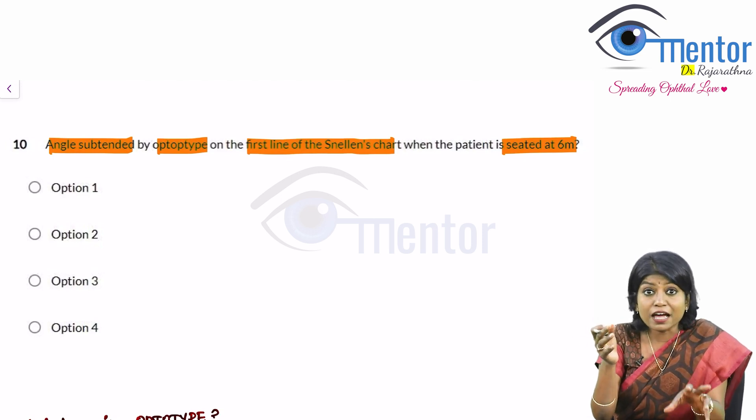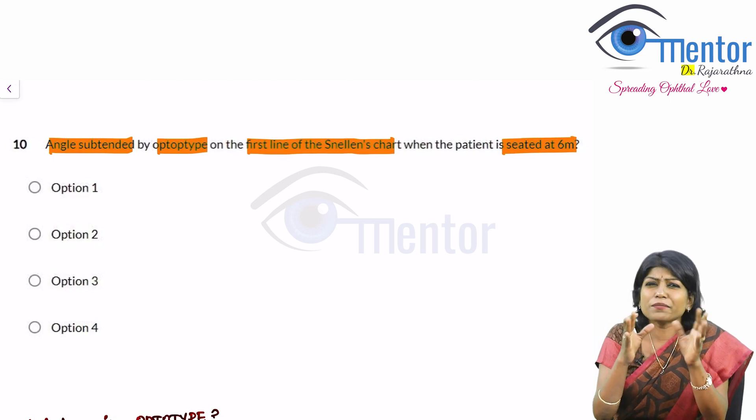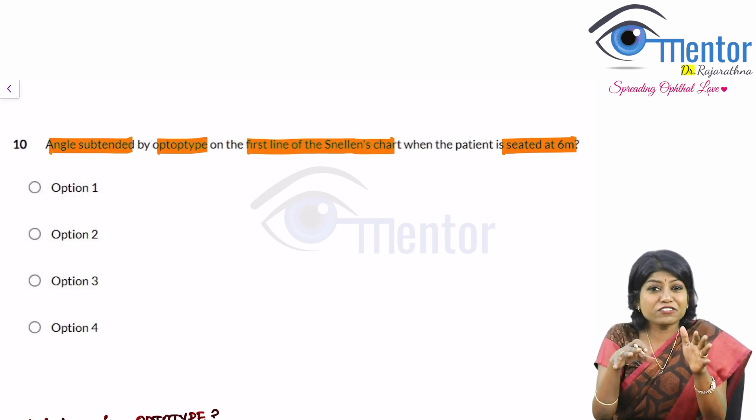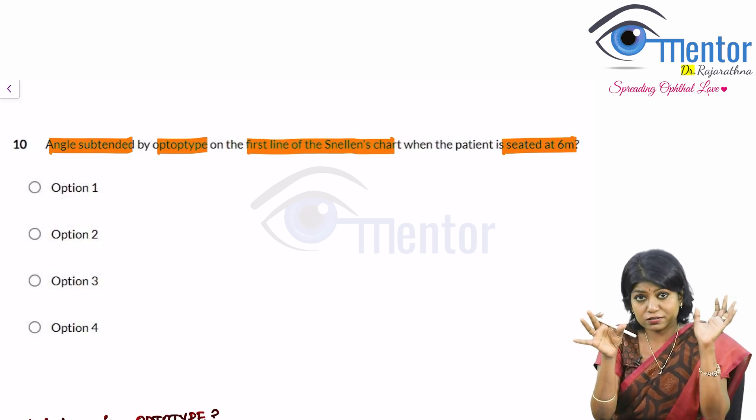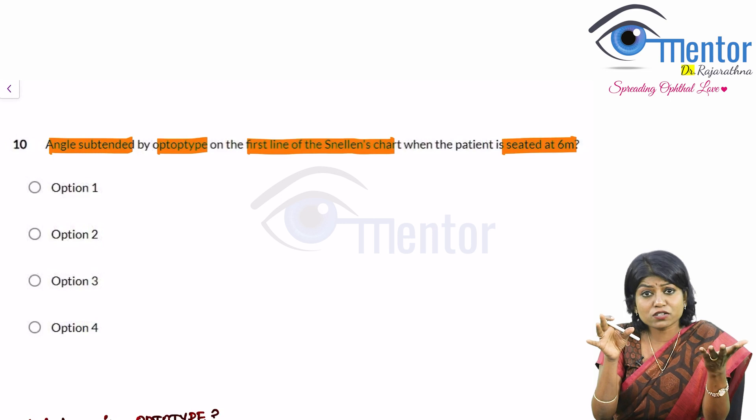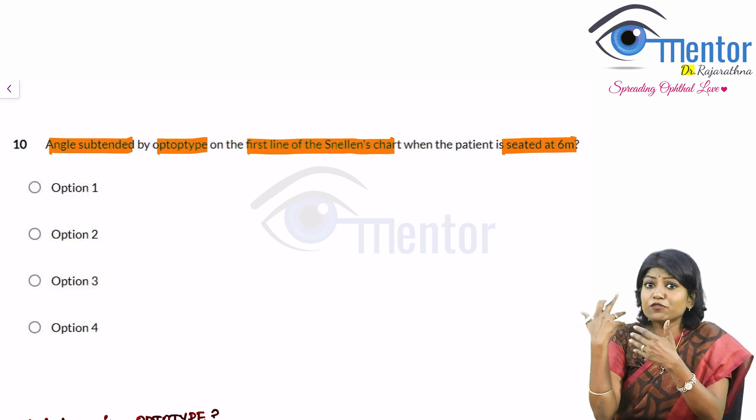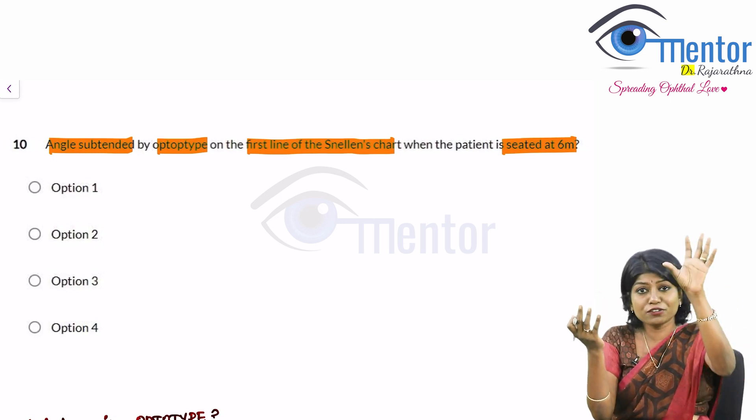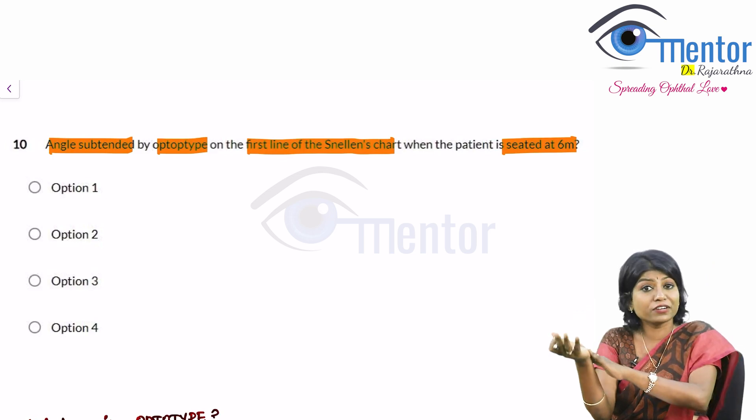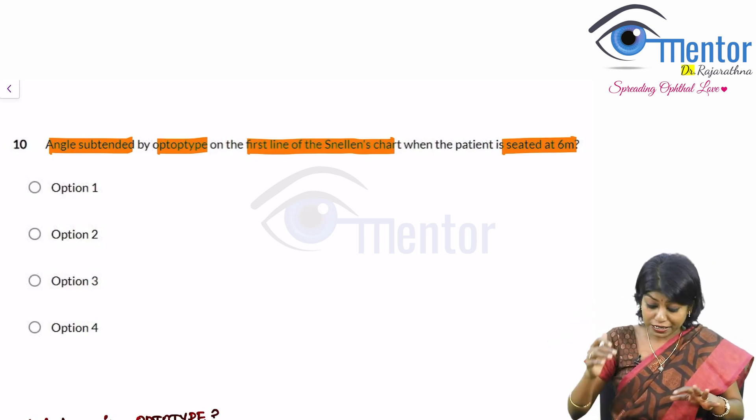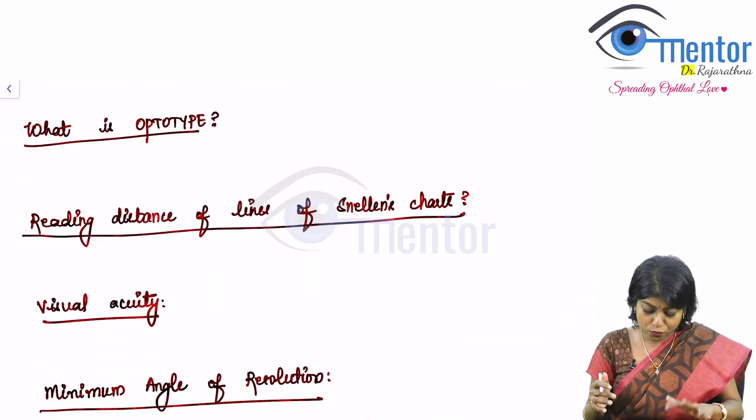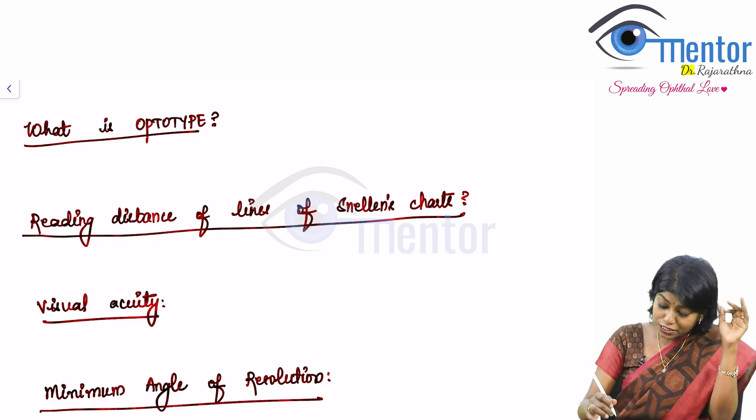Because when you calculate and when you are relatively good at mathematics, when you are good at ordinary division and multiplication, if you are good at that you get the answer and you match it. Because you cannot mug up these questions because every time I can give you different combinations of different lines on the Snellen's, different distance. So there is no point mugging it up. So I want you to know these concepts.